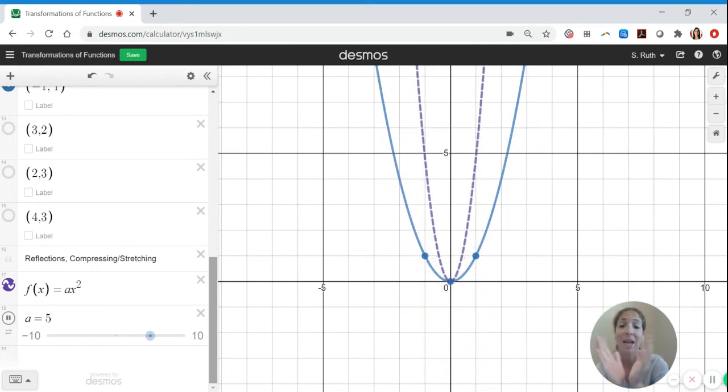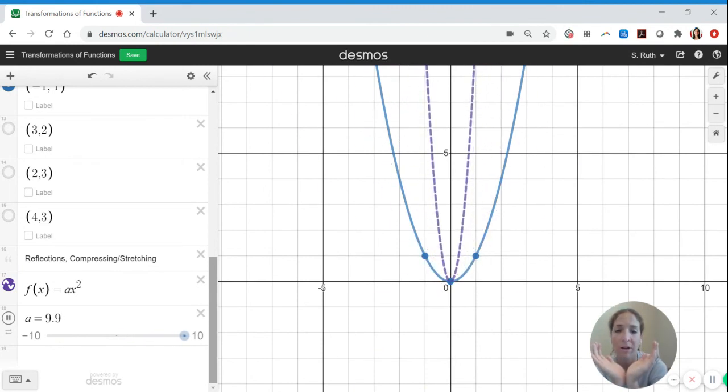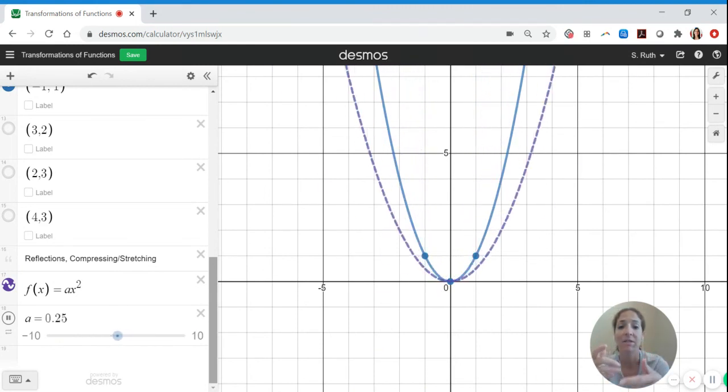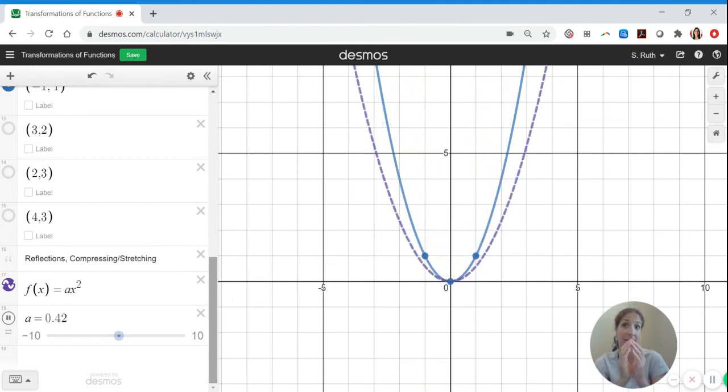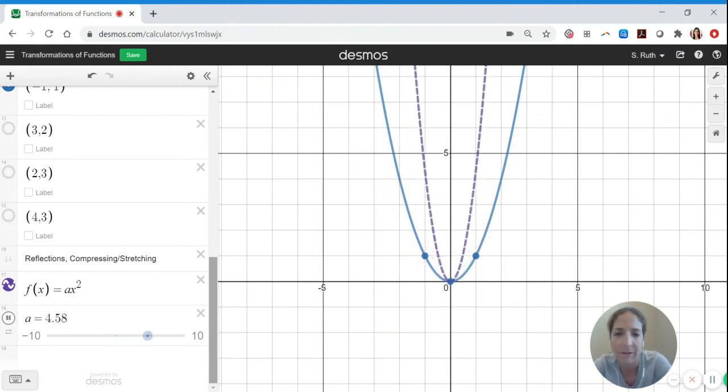And what in the world is it doing? When a is positive, it makes that graph more narrow. I have to be careful. When a is positive but greater than 1, it makes the graph more narrow. When a is positive but less than 1, it makes the graph wider. When a is negative, it's definitely reflecting the graph. And depending upon the size of that negative, it's either reflected and narrower or reflected and wider. And you can see the different values of a that cause those changes.